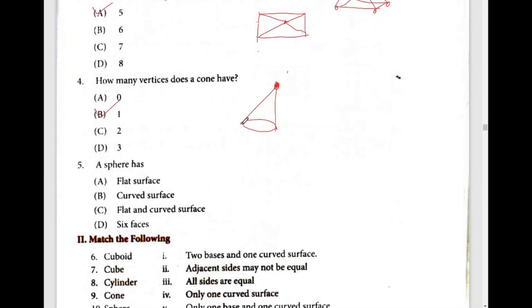A sphere — a sphere is a ball, we can say. There is no flat surface; there is only a curved surface. So the fifth answer is option B.